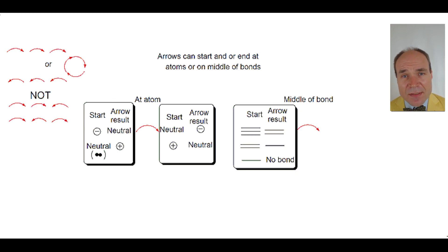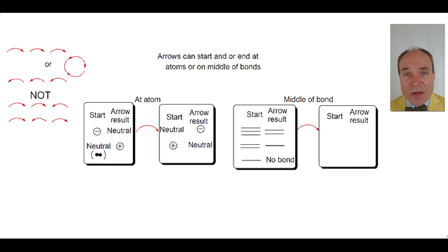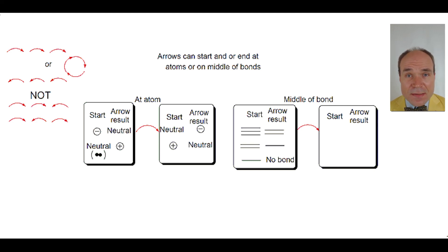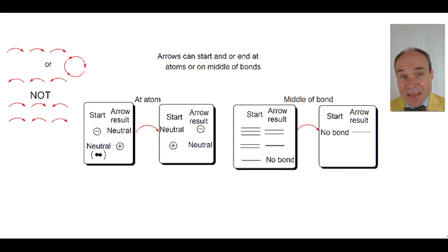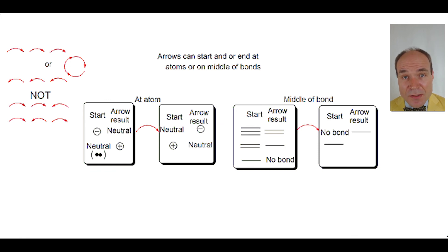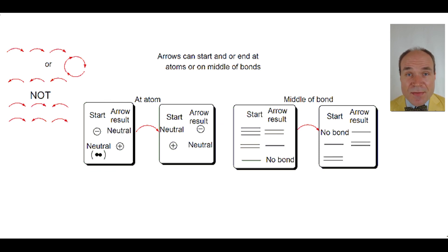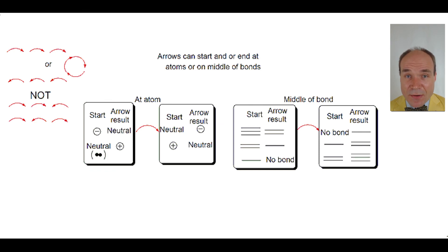Finally, what happens if the arrow ends in the middle of a bond? If there was no bond there, the consequence of the arrow will create a single bond. If there was only a single bond there, the consequence of the arrow movement will make a double bond. And if there was a double bond there, the consequence of the arrow movement will make it a triple bond.